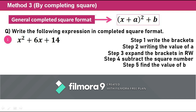This is the general format of the completing square method. Whenever I am having the quadratic equation, this format is termed as completed square format. We know that the general format of the quadratic equation is ax² + bx + c = 0, and this is the general format of the quadratic equation in completed square form.